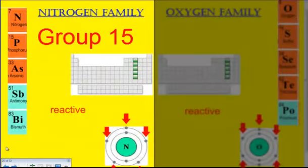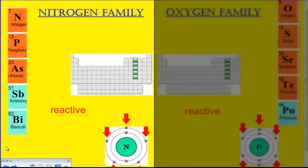Group 15 is labeled the nitrogen family. It's going to be labeled according to the top element, similar to how the carbon and boron family are also named. Notice it is right next to the carbon family, four columns away from the end on the right. The elements that are in this group are nitrogen, phosphorus, arsenic, antimony, and bismuth.